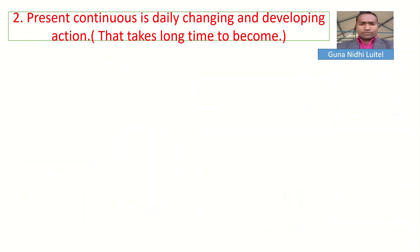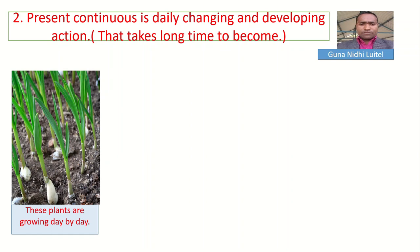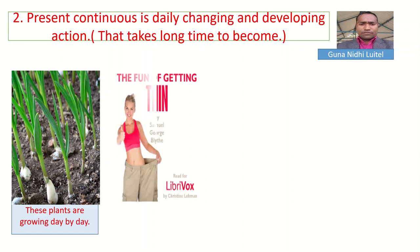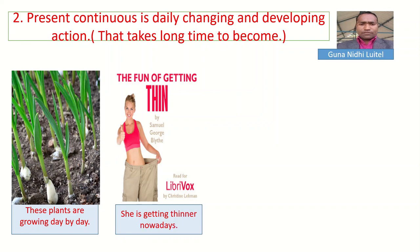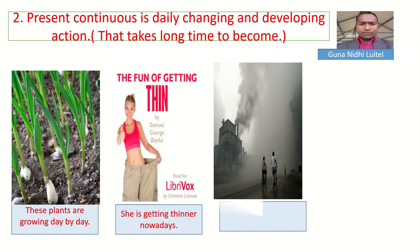Okay, now let us learn the second rule. Present continuous is used for daily changing and developing actions. That means it takes a long time to become. See plants — they do not become like that in one day. It takes a long time. These plants are growing day by day. In the same way, the lady did not become so thin in one day. It takes a long time. So she is getting thinner nowadays.